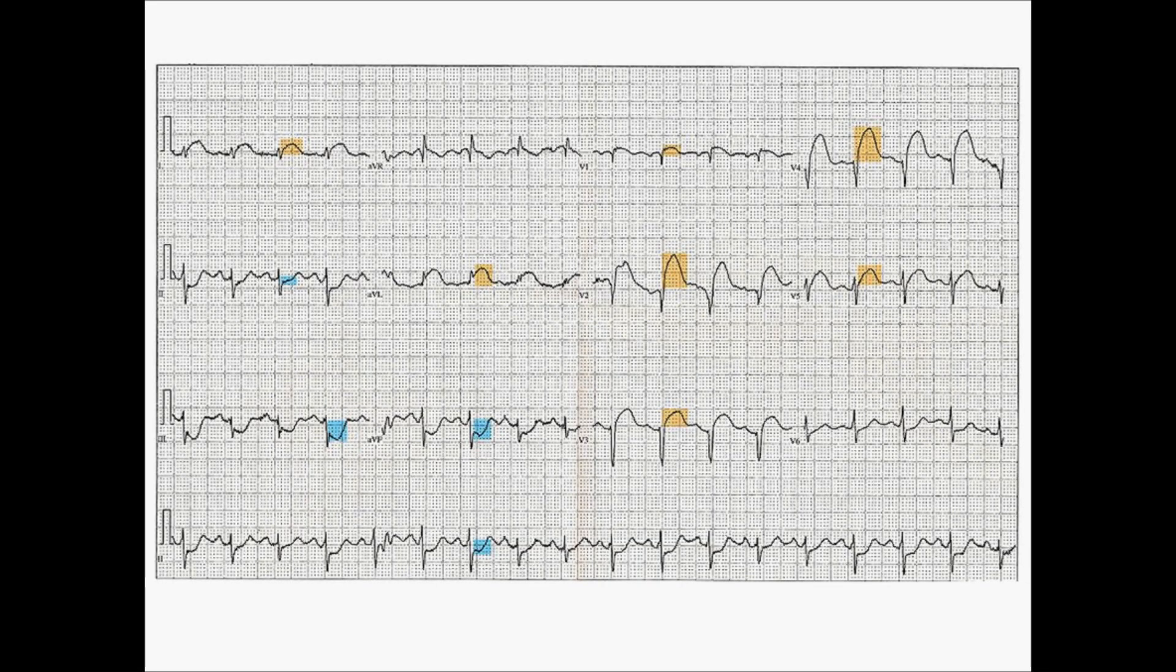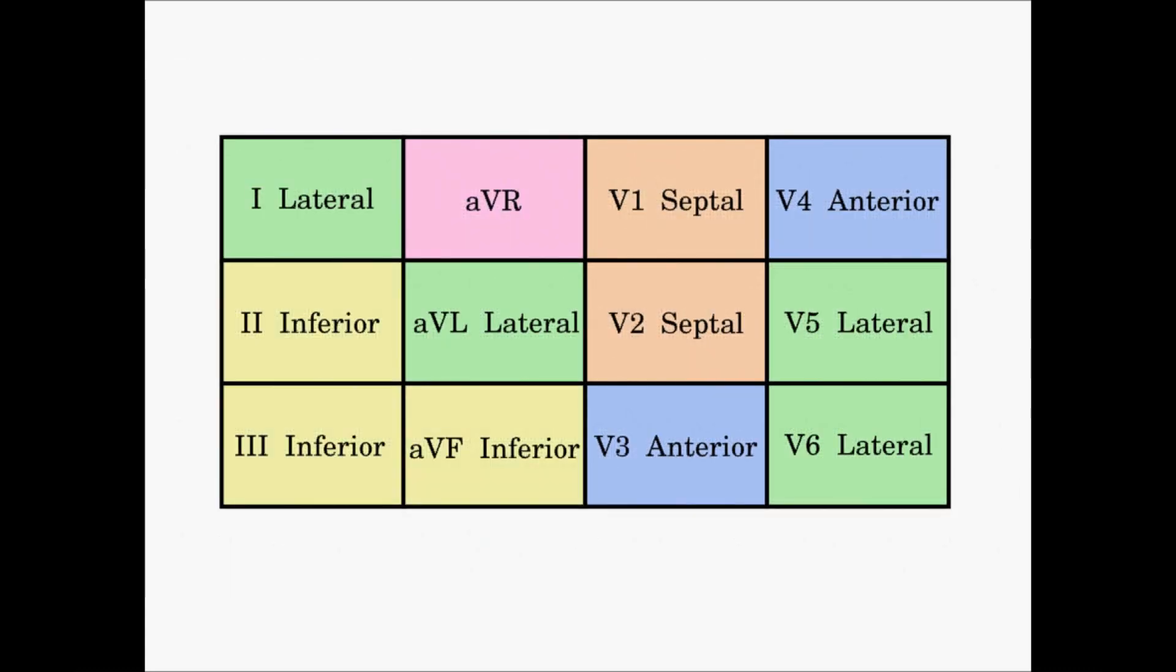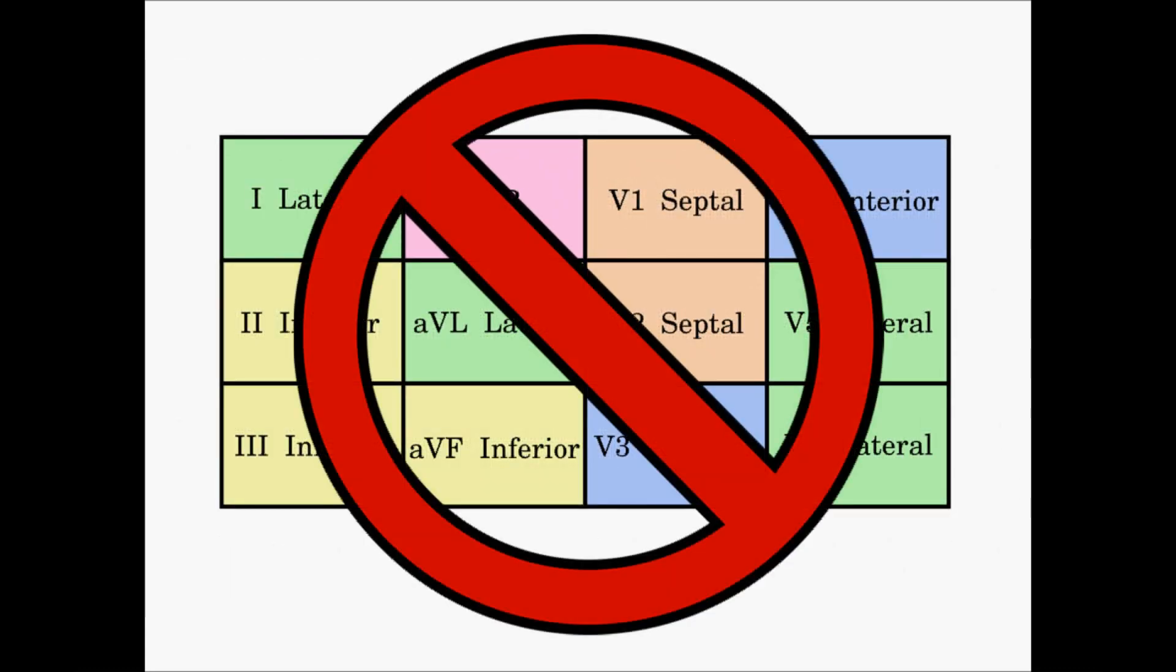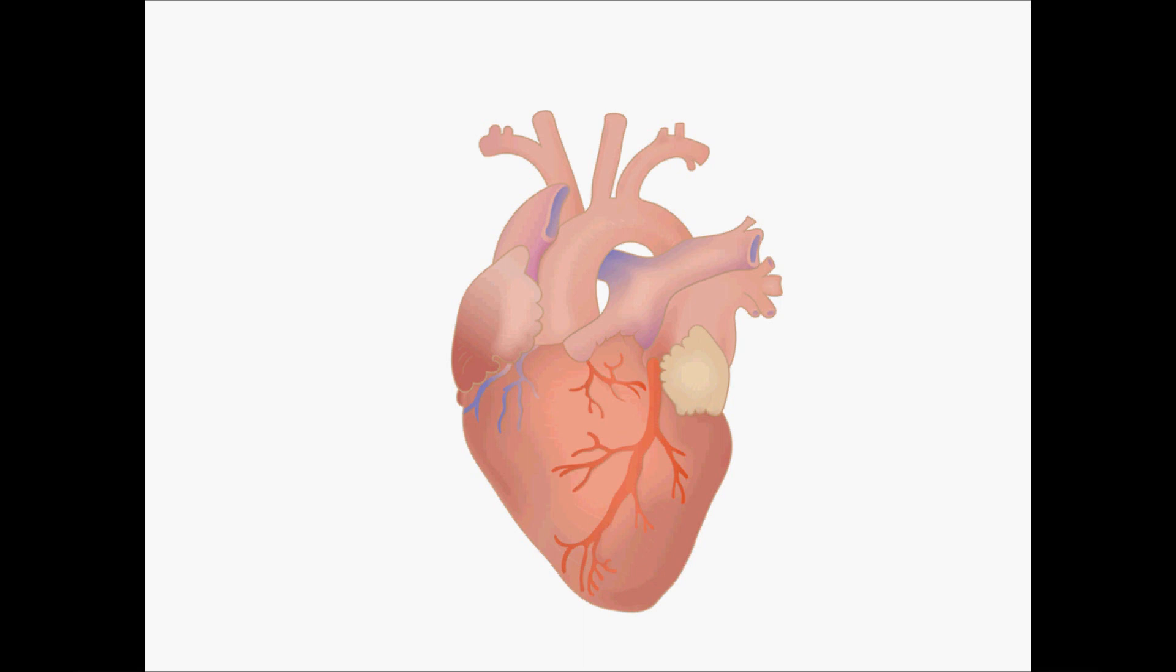So today we're going to be going over the 12-lead EKG and what leads correspond to what anatomical areas of the heart. Some of you may have tried to memorize a chart like this, and I don't recommend that you do that because inevitably you're just going to come back and have to memorize it all over again later. So stay tuned, and today we're going to build a three-dimensional model of what these leads actually represent anatomically within the heart.